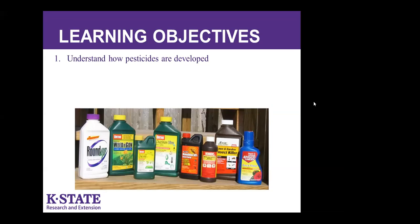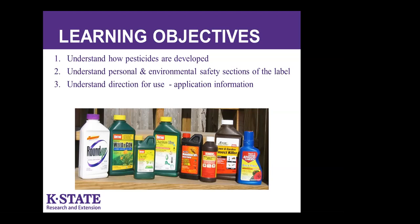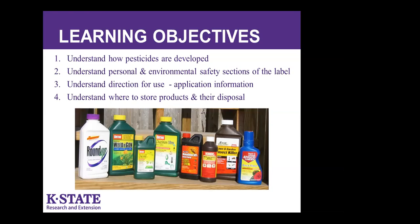Today we're going to learn how pesticides are developed — a process that somewhat resembles drugs that we take. We're going to understand personal and environmental safety sections of the label, which are oftentimes skipped but are very crucial to using the product safely. We'll jump to directions for use, which is where most people are familiar — what pests are controlled, the dose, and how to mix it. And last but not least, there's always information on where to store products and how to dispose of them appropriately.